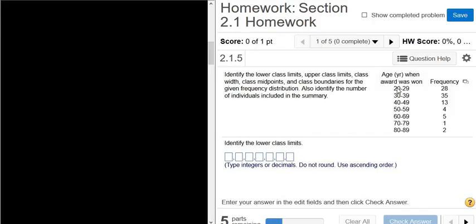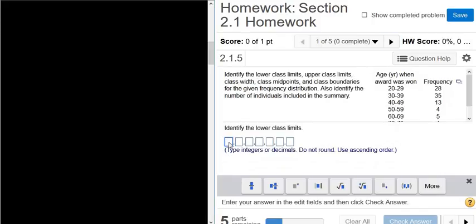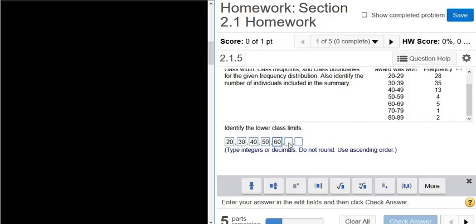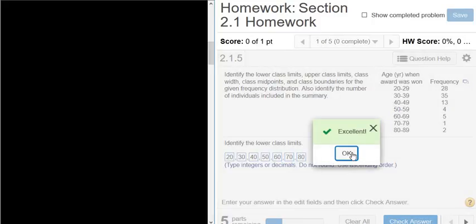So the lower class limits are these numbers here: 20, 30, 40, 50, 60, etc. So they're the smallest numbers that fit in each class. So 20, 30, 40, 50, 60, I'll have to scroll down here, let's see, 70 and 80. Let's click check answer. Good stuff.